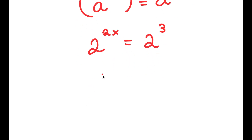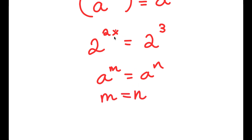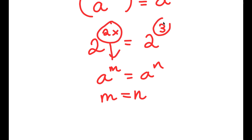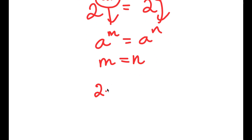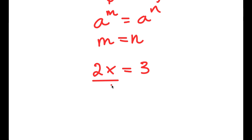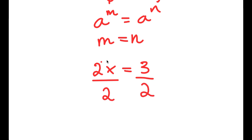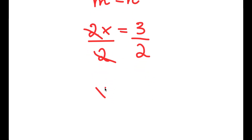If I have something in the form a to the power of m is equal to a to the power of n, this means that m is equal to n. So in this case 2x equals 3. This is a simple equation — all I have to do is divide both sides by 2. These two cancel out and I get x is equal to 3 over 2.